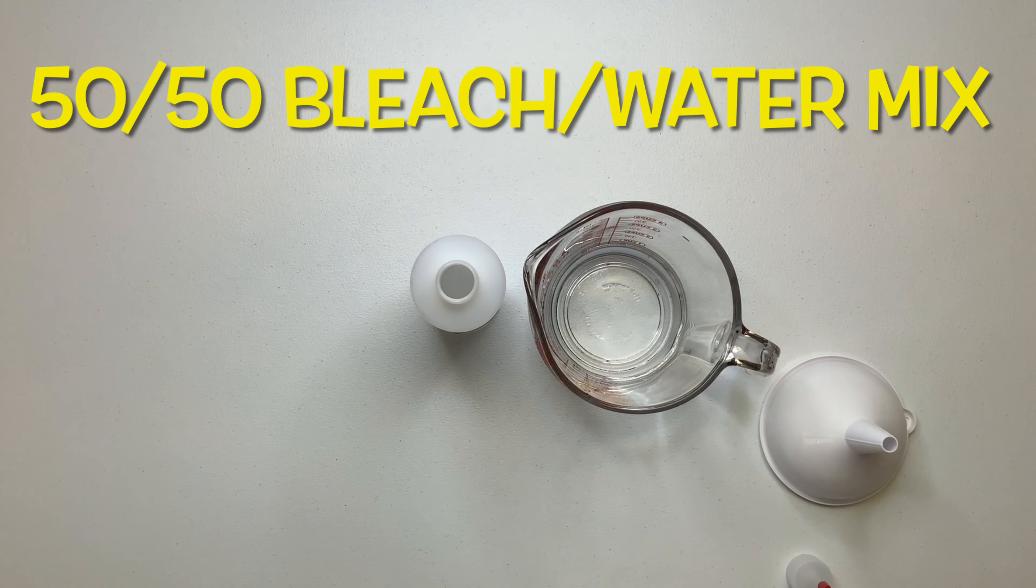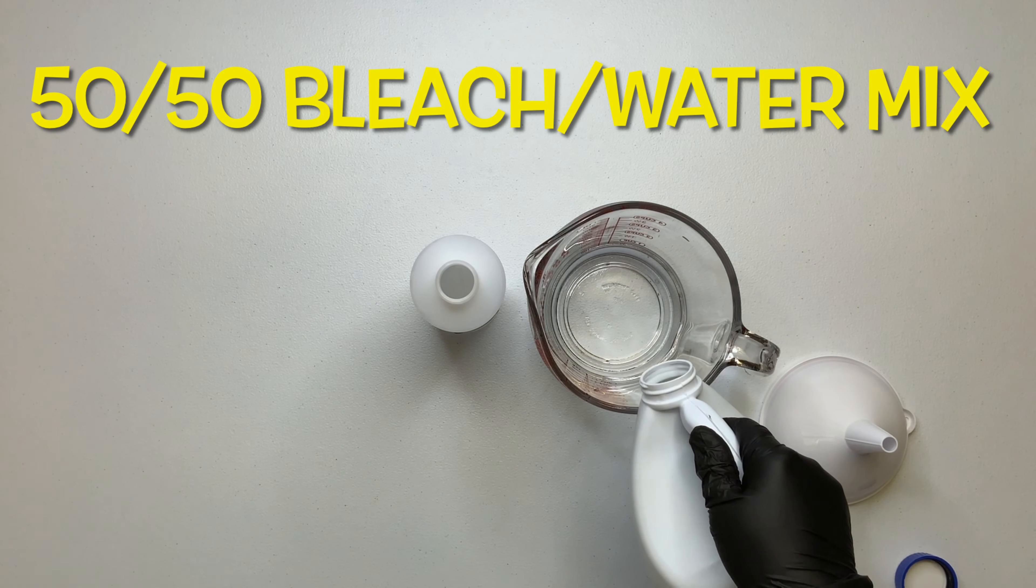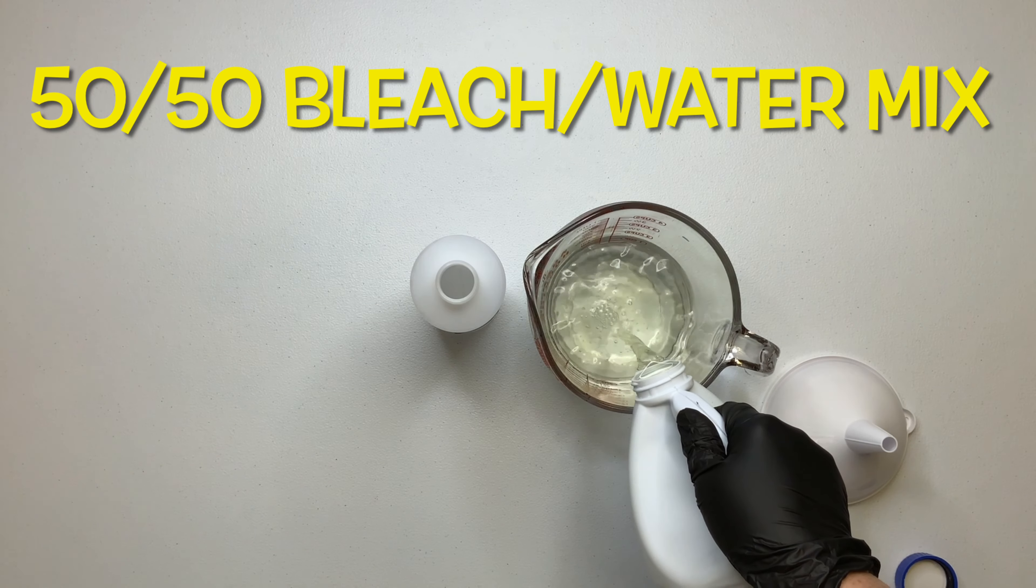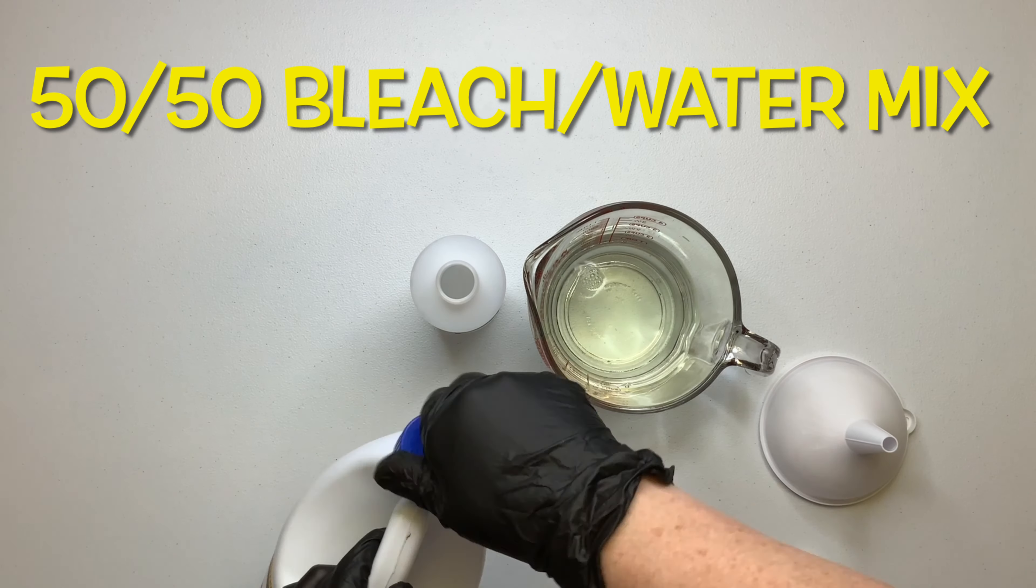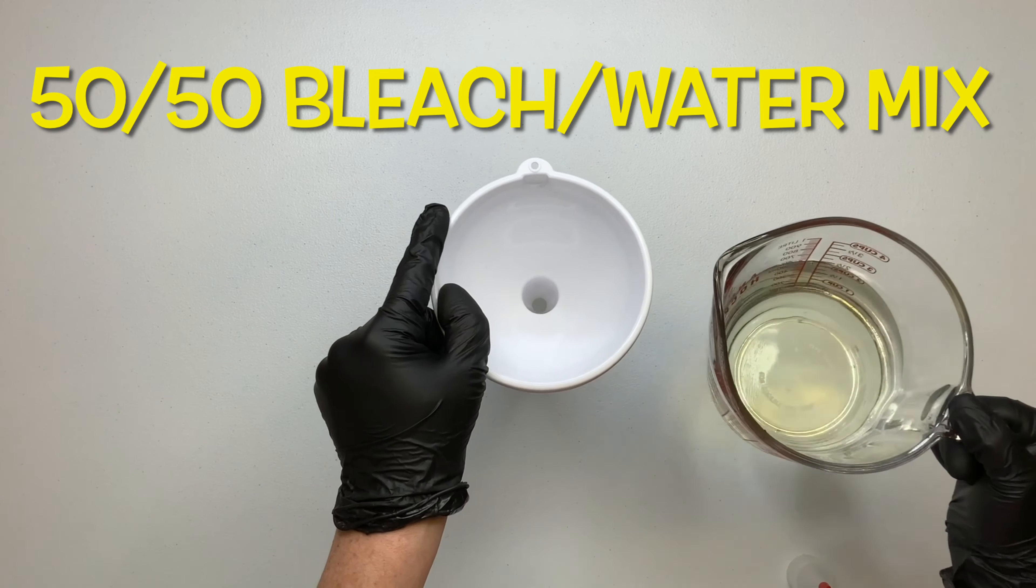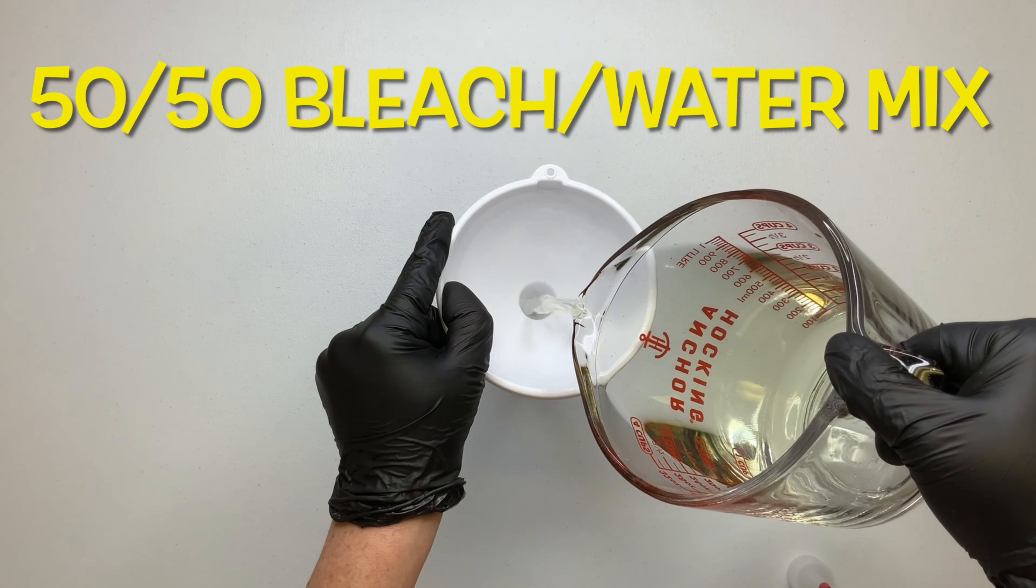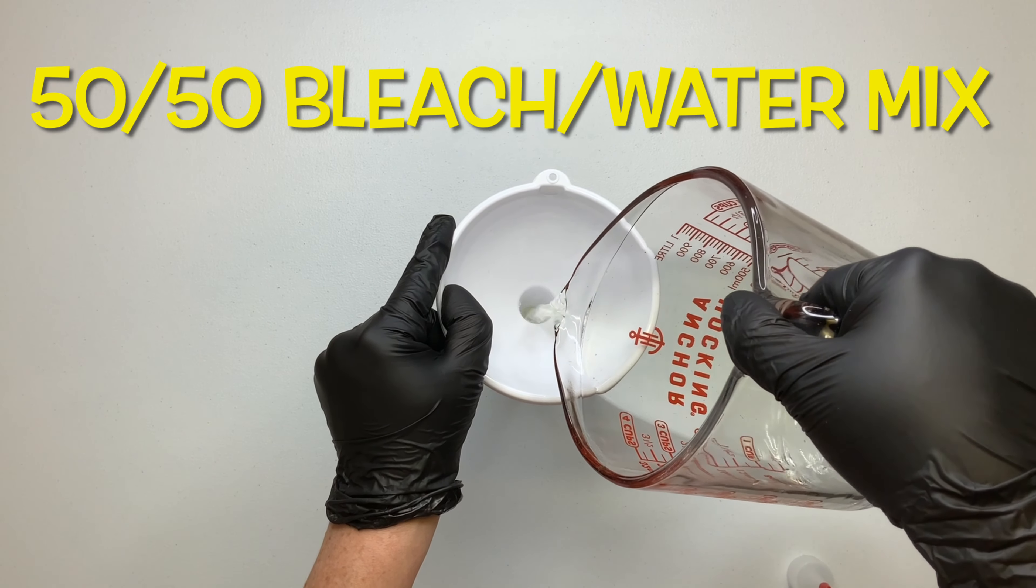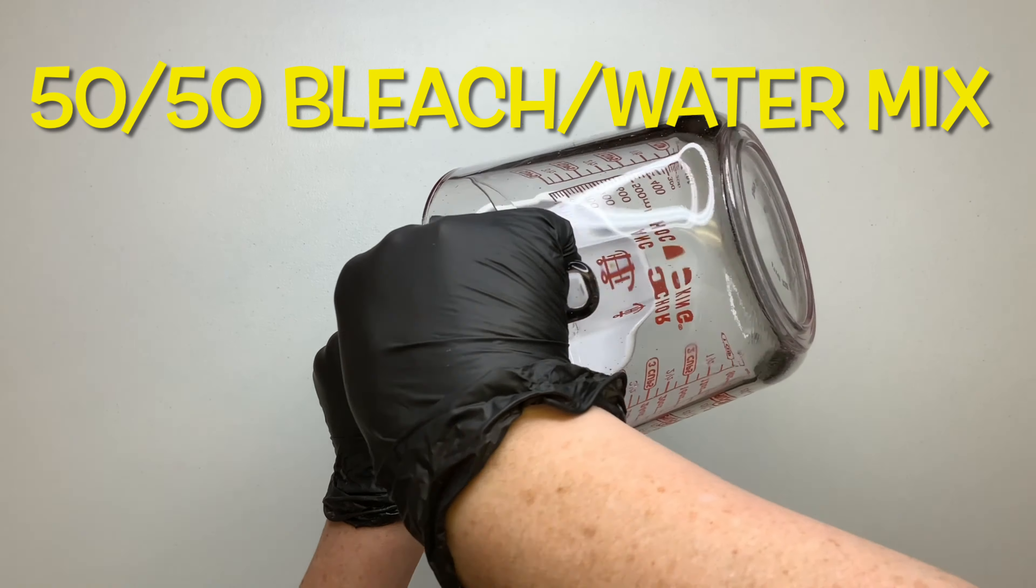Now, I'm going to mix up my bleach for this reverse dye, and it's a 50-50 blend. So I'm mixing one cup of bleach to one cup of water, because I'm going to be doing several shirts. But as long as you just do half and half, you'll be fine if you want to mix a smaller batch.